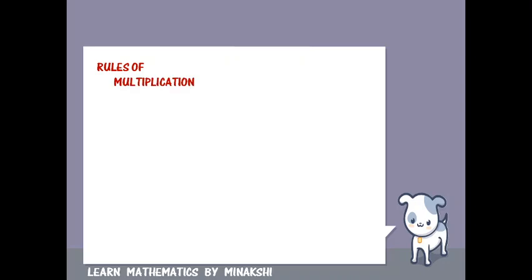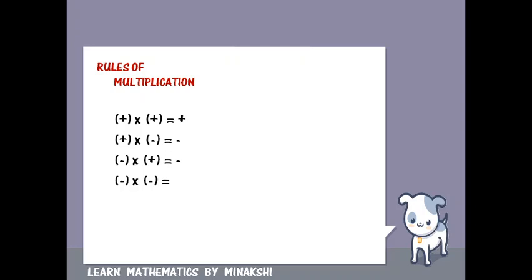First, the rules of multiplication. Plus when multiplied with plus sign gives plus sign. When plus sign is multiplied with minus sign it gives minus sign. When minus sign is multiplied with plus sign it gives minus sign. When minus sign is multiplied with minus sign it gives plus sign.